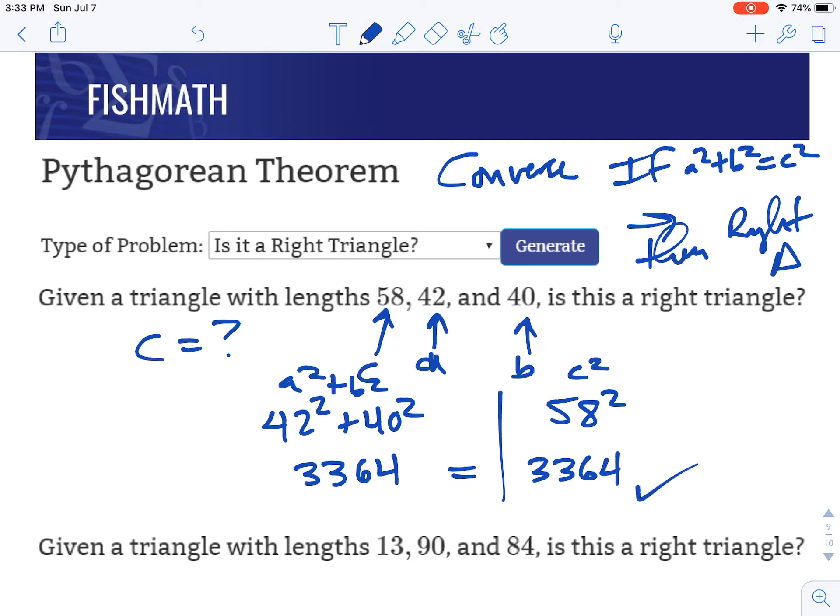Now we can say, yep, they're equal, which is great, which means it is a right triangle. Because it worked in the formula, it is a right triangle.